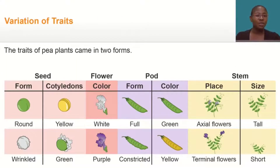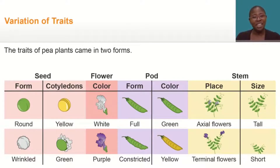Mendel used garden peas to discover the basic principles of heredity, because the characteristics of pea plants came in two forms or traits.